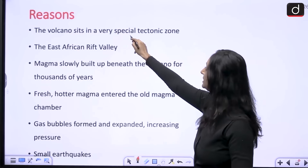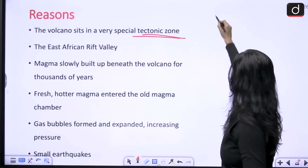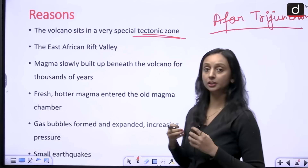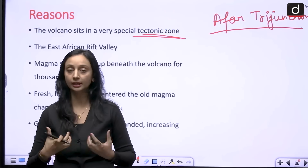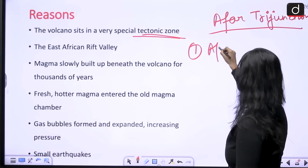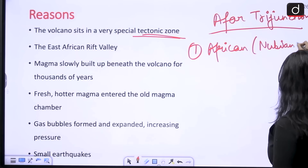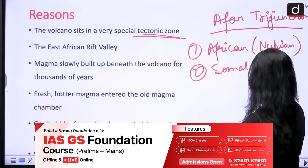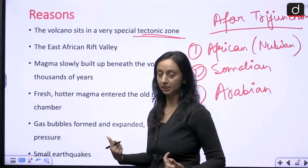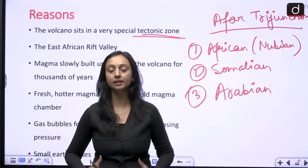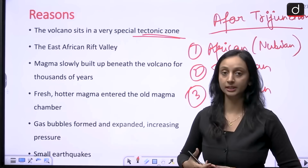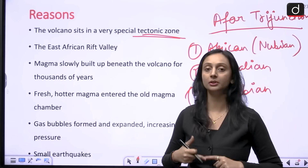The first reason is that the volcano sits in a very special tectonic zone — the Afar Tri-junction. The Afar Tri-junction is a unique tectonic zone; it is a divergent plate boundary because here three plates are pulling apart from each other. Those three plates are the African plate (also called the Nubian plate), the Somalian plate, and the Arabian plate. As these three plates pull apart, the earth's crust above becomes thin, making it easier for magma to vent up, break through the crust, and move out as lava. This is one possible reason behind the eruption.